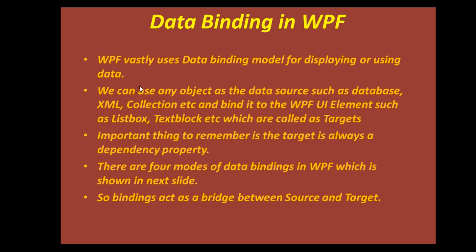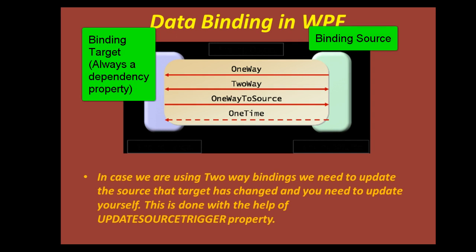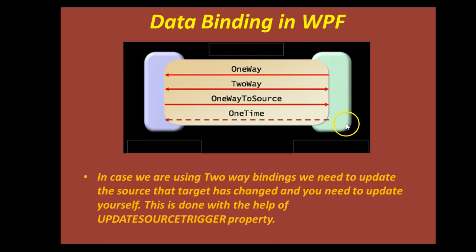Always remember that the target property is always a dependency property in data binding. There are 4 modes of data binding in WPF, shown in the next slide. These 4 modes are: one way, two way, one way to source, and one time. The thing on the right represents the target, and the thing on the left is called the source. These 4 modes are self-explanatory. If this is a database and this is a UI element like a text block, the value from this database will be displayed onto the text block.